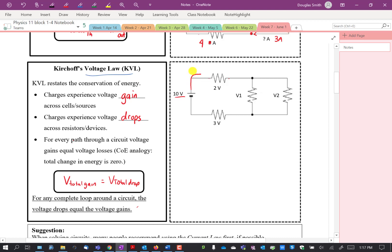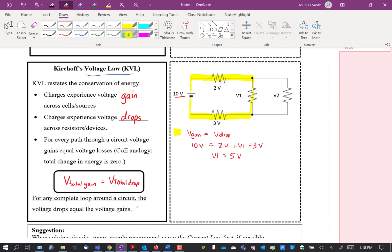Here I'm sketching a loop around a circuit. So as you move across that circuit, all the voltage gain has to equal all the voltage drop. Starting here, we have a gain of 10 volts. The rest are drops: 2 volts plus V1 plus 3 volts. Therefore, V1 must be equal to 5 volts, so 2 plus 5 plus 3 is 10. That's one way to use this voltage law. I could draw a different loop around this circuit.